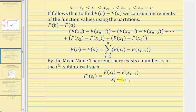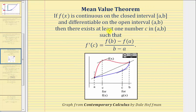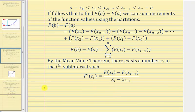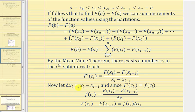And just in case you need it, here's a quick review of the mean value theorem. If the conditions above are met, the mean value theorem states that f prime of c is equal to this quotient, where this quotient is the slope of the secant line passing through the two end points of the closed interval, and c is an x value in the open interval where the slope of the tangent line equals the slope of the secant line. Now we'll let delta x sub i be equal to x sub i minus x sub i minus one, and since big F prime of c sub i equals little f of c sub i — because big F of x is the antiderivative of little f of x, and therefore the derivative of big F equals little f.